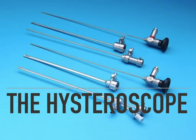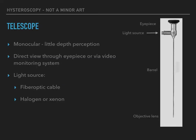We will now take a closer look at the hysteroscope. Most often a rigid hysteroscope is used. It consists of an outer sheath which surrounds the telescope, distending media inflow and outflow channels, and at times separate channels for operative instruments. The telescope consists of three parts: the eyepiece, barrel, and objective lens. The surgeon can look directly through the eyepiece or view the image via a video monitoring system. Illumination is provided by a light source connected by a fibre optic cable.